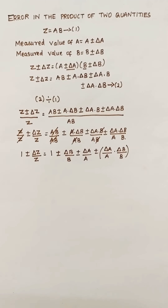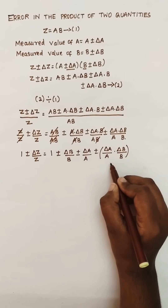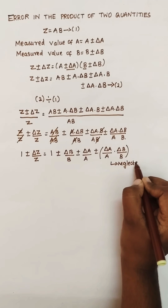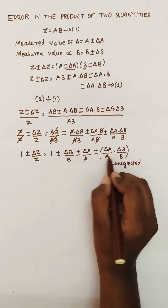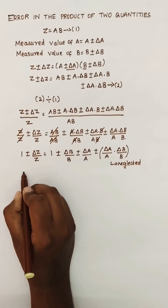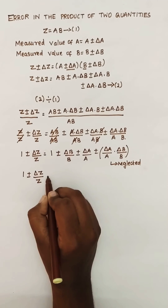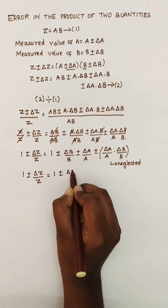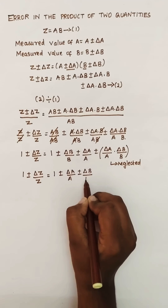Now, delta a/a into delta b/b is a very small term. Already delta a/a is small, and delta b/b is small, so when you multiply them the value is very much small — we can neglect this. Write the remaining equation: 1 plus or minus delta z/z equals 1 plus or minus delta a/a, plus or minus delta b/b.